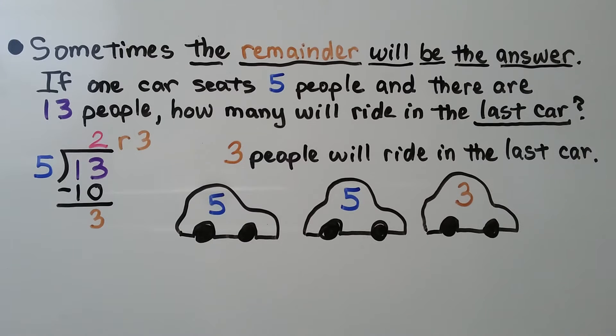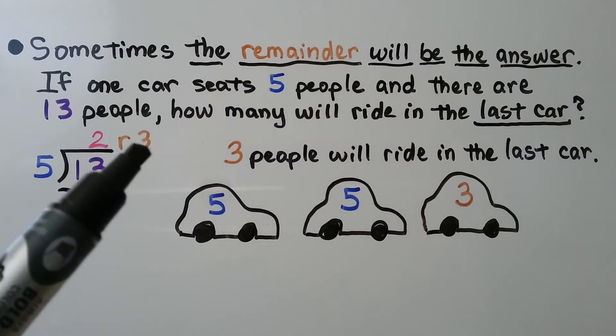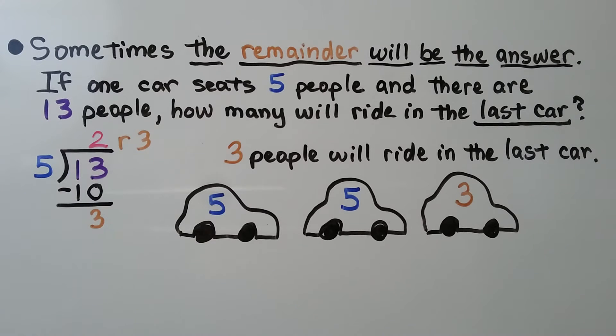Sometimes the remainder will be the answer. If one car seats 5 people, and there are 13 people, how many will ride in the last car? So we still have 13 divided by 5. That gives us 2, with the remainder of 3. It's asking how many people are going to ride in the last car. The answer is 3, the remainder.